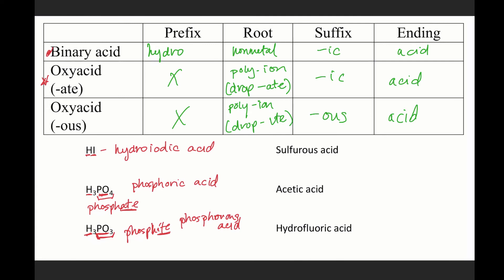Okay, now, sulfurous acid. So first, we would note the ending. So it's got acid, which tells you it's H plus something. This us ending tells you that it's an oxyacid that came from a polyatomic ion that ended with ite, so it came from sulfite. So sulfite is SO3, two minus, I know it also has H plus, and so then it's about balancing the magnitude of charge, which means H2SO3.